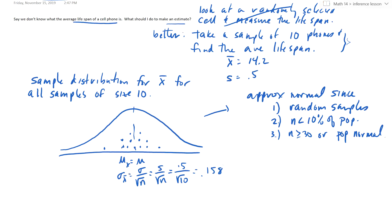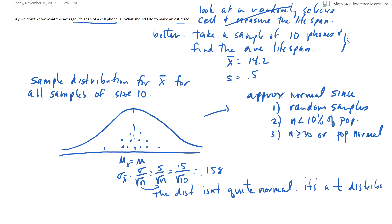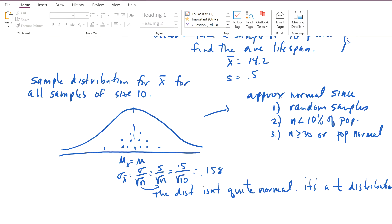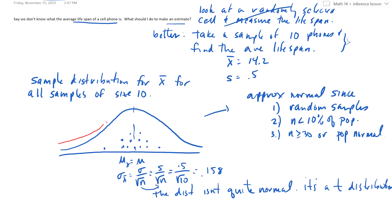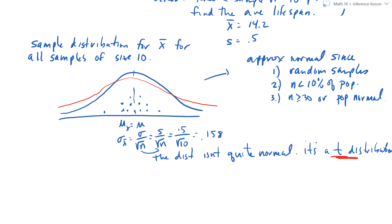The problem here is that once I switch from sigma to S, the distribution isn't quite normal anymore. It's a T distribution. And so things are going to change — instead of calculating Z scores, I'm calculating T scores. We just have to change things a little bit to use T's.